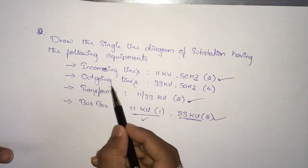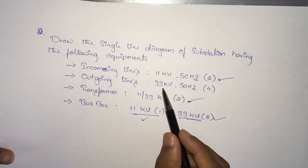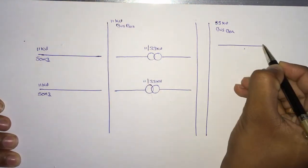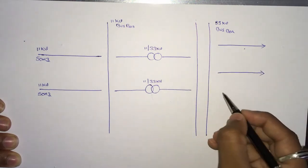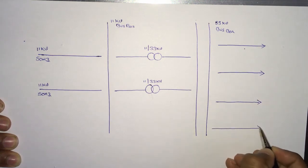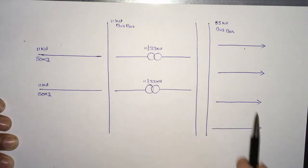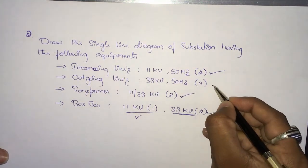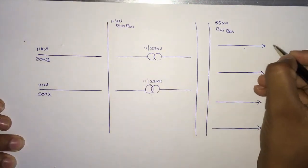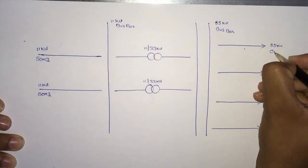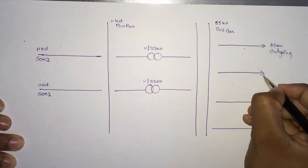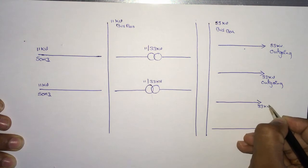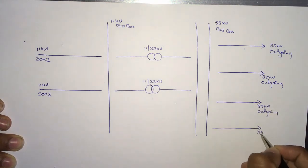Now we are left with outgoing lines of 33 kV 50 Hz, four quantity. Since it's 33 kV, we connect it to the 33 kV bus bar. We draw outgoing line 1, outgoing line 2, outgoing line 3, and outgoing line 4 connected to the 33 kV bus bar. These are the basic requirements fulfilled.